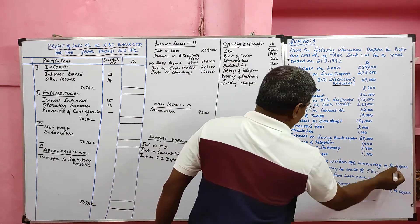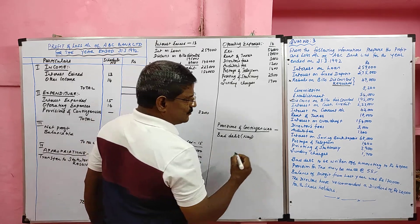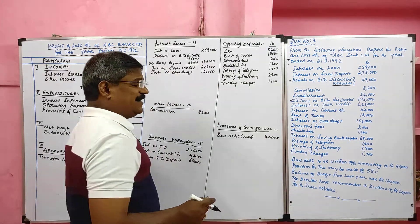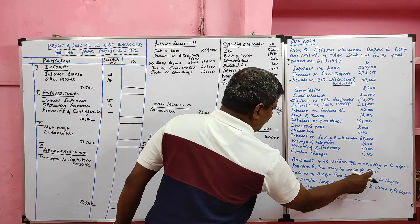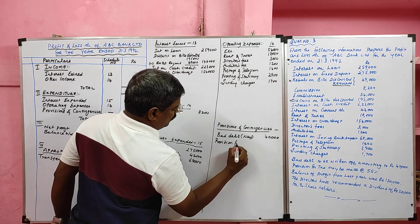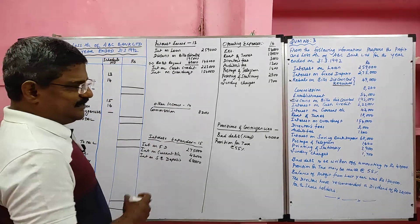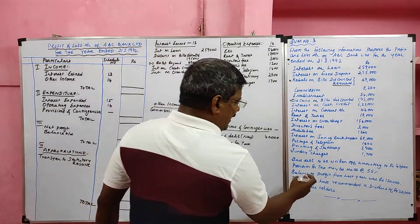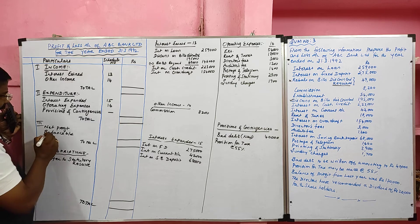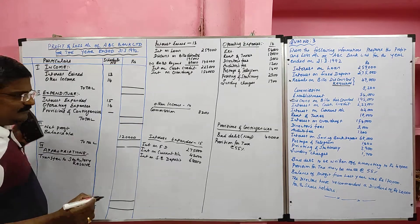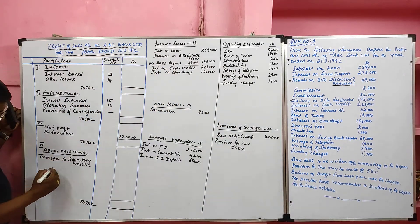Sundry charges is also an operating expense at rupees 1,700. Moving to adjustments: bad debts to be written off is a new bad debt of rupees 40,000, included in provisions and contingencies. New bad debts should be deducted from loans and advances on the asset side of the balance sheet and recorded under provisions and contingency. Provision for tax is to be calculated at 55 percent — we will calculate that later. Balance of profit from last year rupees 1,20,000 is recorded in the profit and loss account against balance B/D. Proposed dividend of rupees 20,000 is included in provisions in the profit and loss account under appropriation.